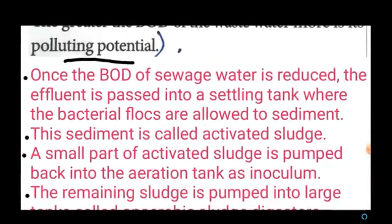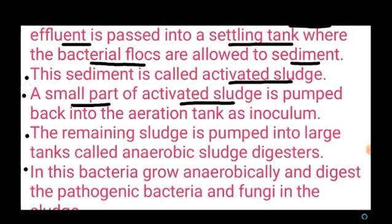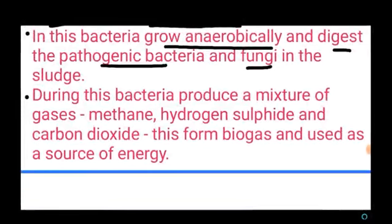Once the BOD of the sewage water is reduced, the effluent is passed into a settling tank, where flocs are allowed to sediment at the bottom. This sediment is called activated sludge. A small part of the activated sludge is pumped back into the aeration tank as inoculum, and the remaining large amount is pumped into large anaerobic sludge digesters. There bacteria grow anaerobically and digest the sludge, producing a mixture of gases — methane, hydrogen sulfide, and carbon dioxide — which form biogas, used as a source of energy.